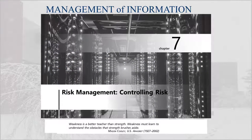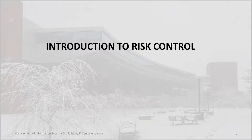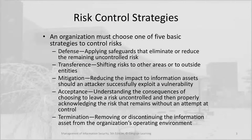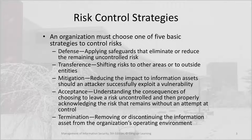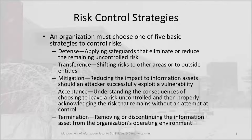Topic 7: Risk Management - Controlling Risk. An organization must choose one of five basic strategies to control risks. Defense means applying safeguards that eliminate or reduce the remaining uncontrolled risk. Transference means shifting risks to other areas or to outside entities. Mitigation means reducing the impact to information assets should an attacker successfully exploit a vulnerability. Acceptance means understanding the consequences of choosing to leave a risk uncontrolled. And finally, termination means removing or discontinuing the information asset from the organization's operating environment.